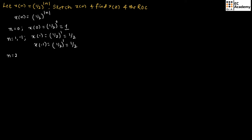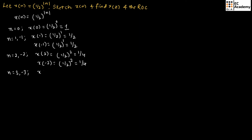When n is equal to 2 as well as minus 2, X of 2 equals 1 by 2 whole to the power of 2, which is 1 by 4. And X of minus 2 also equals 1 by 4. When n is equal to 3 as well as minus 3, X of 3 equals 1 by 2 whole to the power of 3, which is 1 by 8, and X of minus 3 also equals 1 by 8.